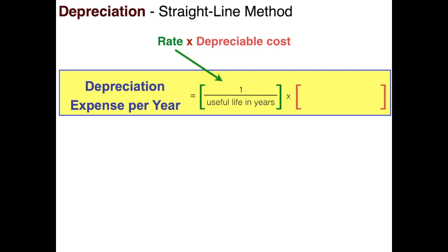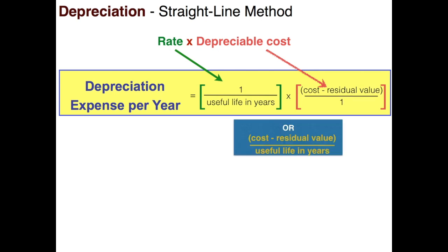Depreciable cost is equal to cost less residual value. Residual value is what you think you could possibly sell an asset for when you're done with it — you don't want to depreciate an asset below residual value. We can put that over one as a fraction, and when you multiply the two fractions together the ones cancel out, leaving us with cost minus residual value divided by the useful life in years.